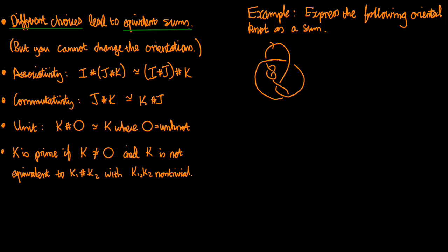So different choices lead to equivalent sums. That's explained in detail in the notes and you should probably go and have a careful read of that yourselves. However you cannot change the choice of orientation. You cannot change the orientations. If you did then bad things might happen. You might end up finding different sums if you change the orientations of the J and K that you're summing together.